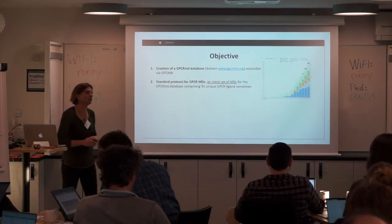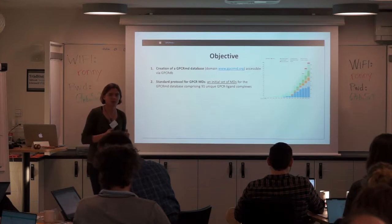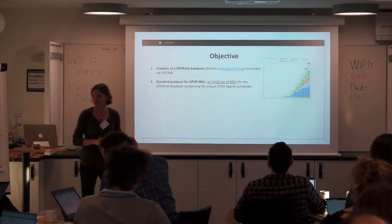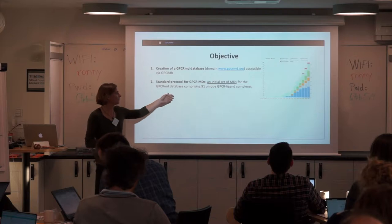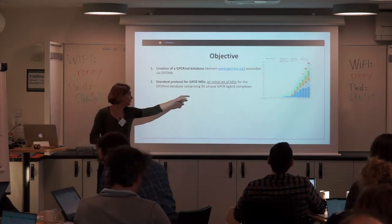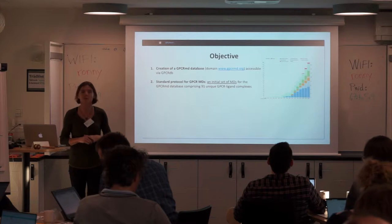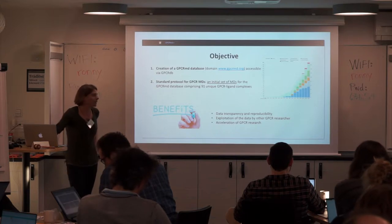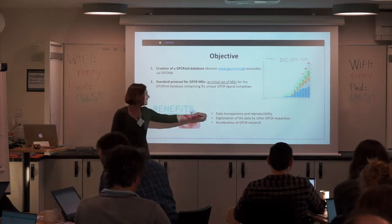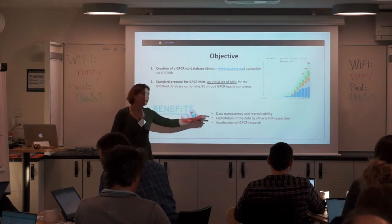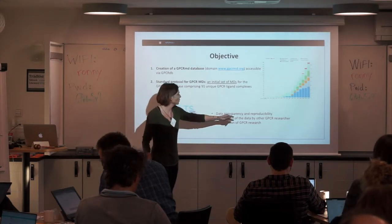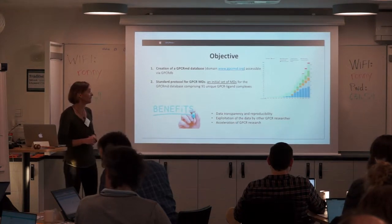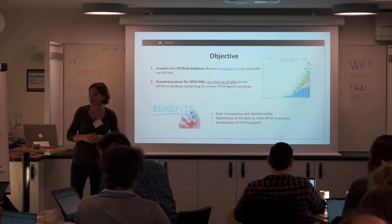Second, we also wanted to make the first effort to generate a first dataset which can be submitted to this database. At that time we had about 91 unique GPCR-ligand complexes that had been crystallized, and that was a second goal. The benefits are clear: we really promote data transparency and reproducibility, other researchers could explore GPCR data, and overall we would accelerate GPCR research.